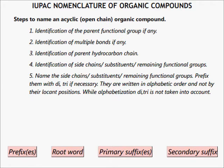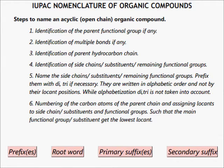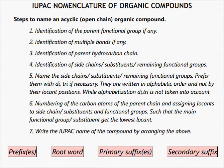They are written in alphabetic order and not by their locant position. While alphabetization, di- and tri- are not taken into account. Number six: numbering the carbon atoms of the parent chain and assigning locants to the side chain substituents and functional groups such that the main functional group gets the lowest locant. Number seven: write the IUPAC name of the compound by arranging the above.